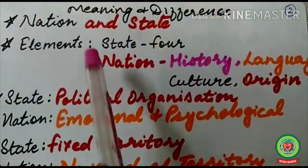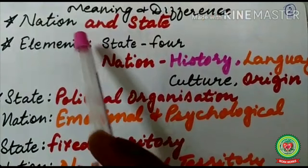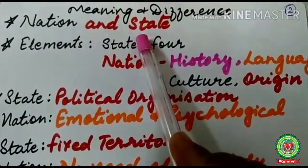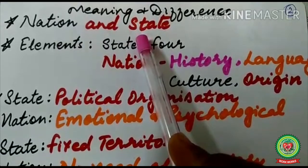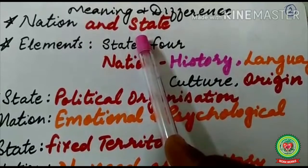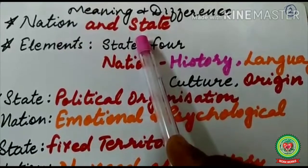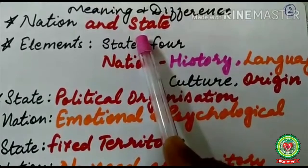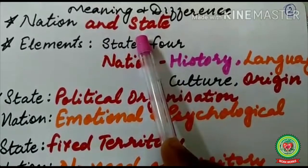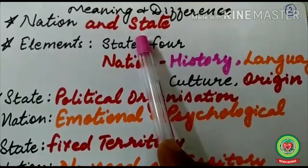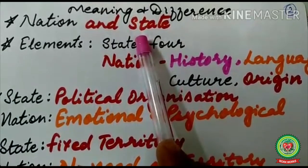Now let's discuss the meaning of nation and state in political science. The nation refers to a group of people who feel bound into a single body by shared culture, values, religion, and language. As discussed yesterday, nation means a group of people who feel bound by several ties like common history, culture, language, and origin.